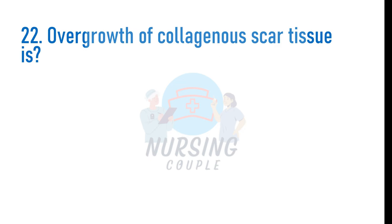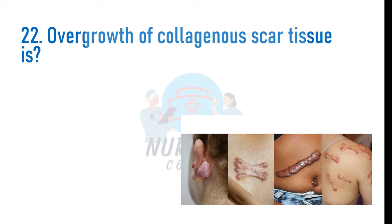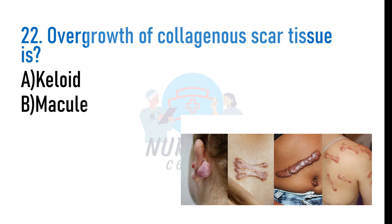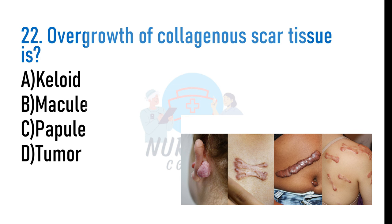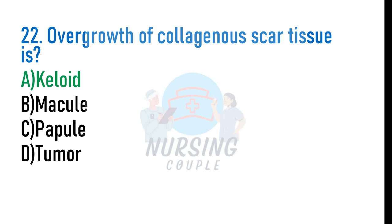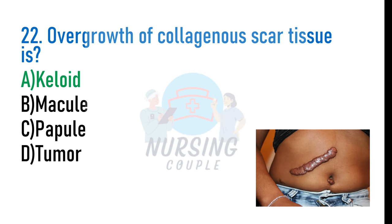Overgrowth of collagenous scar tissue is: A. Keloid, B. Macule, C. Papule, D. Tumor. The answer is Option A: Keloid. A keloid scar is an overgrowth of tissue that occurs when too much collagen is produced at the site of a wound. The scar keeps growing even after the wound has healed.